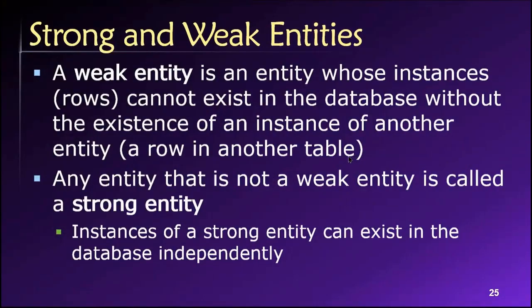When we create these entity relationship diagrams, we have various entities that collectively represent the tables in the database, and we have the relationships between them, the cardinalities and so on. Among all of those entities, we can classify each one as either being weak or strong. The difference between a weak and a strong entity is simply this: can we add new rows of data to that entity or to that table without there already being some kind of matching row in another table?